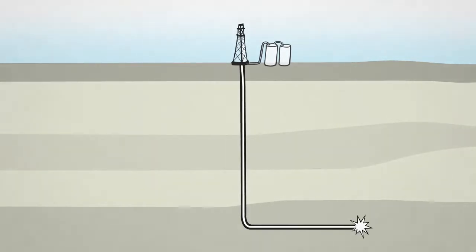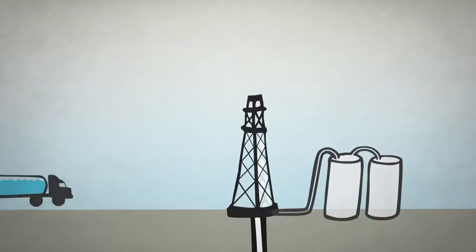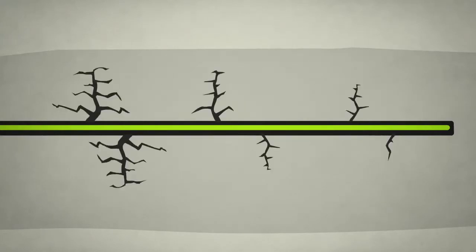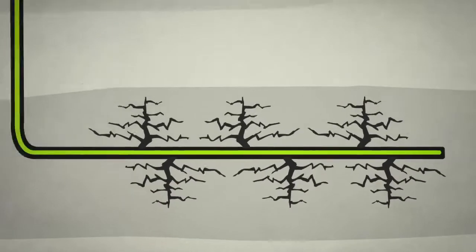Fracking involves drilling a hole up to 4km underground into shale rock. A mix of water, sand and chemicals is then pumped in under high pressure. The shale rock is fractured and natural gas is discharged.